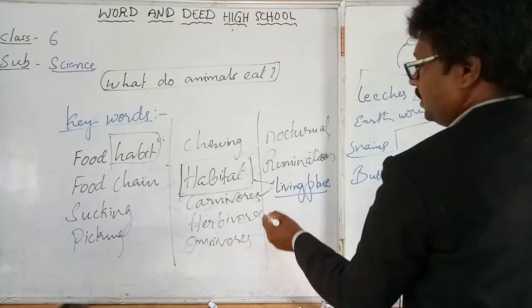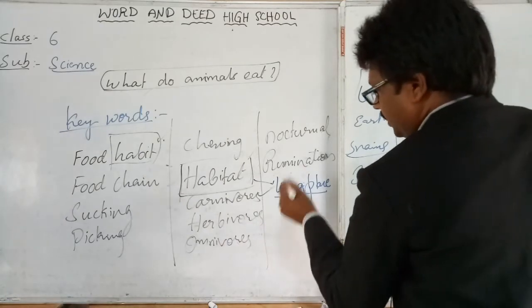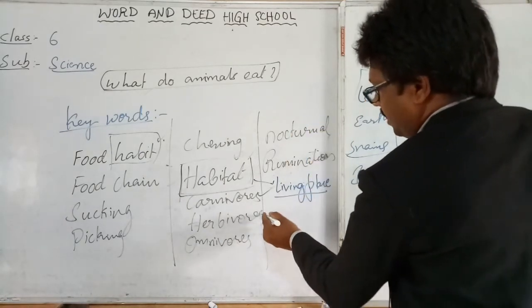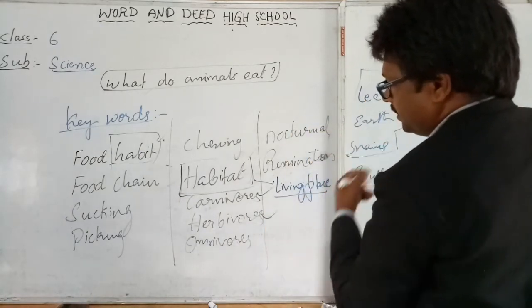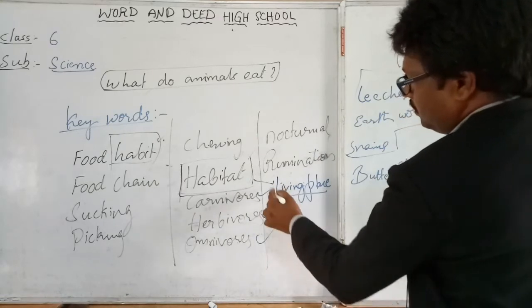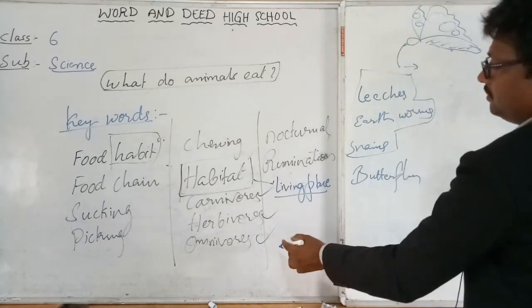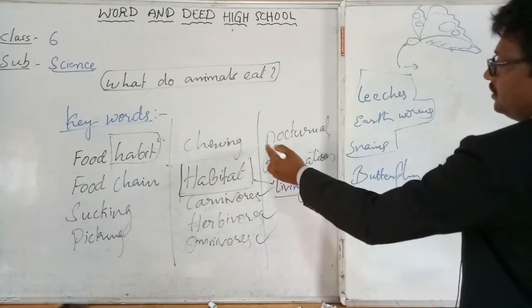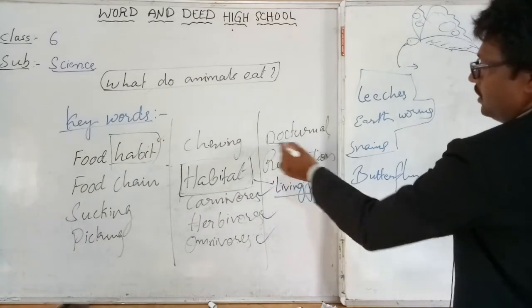Carnivores are only flesh-eating animals. Herbivores are only plant-eating animals. Omnivores eat both flesh and parts of plants.